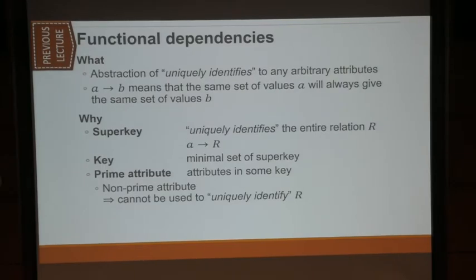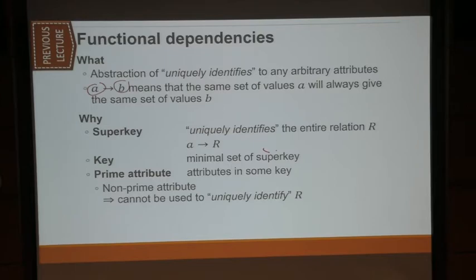Functional dependencies are basically about what uniquely identifies other things. So an attribute A, if it uniquely identifies the values of attribute B, that means there is an FD of the form A to B. That's what functional dependencies mean.